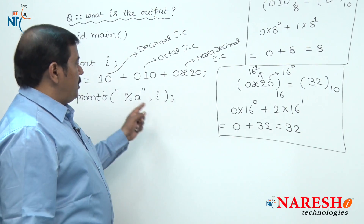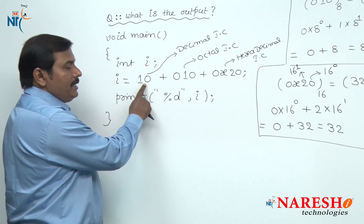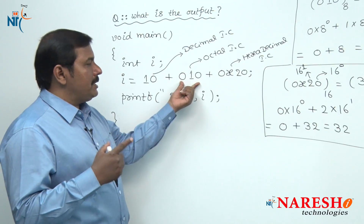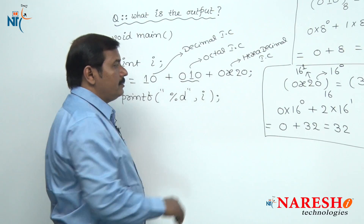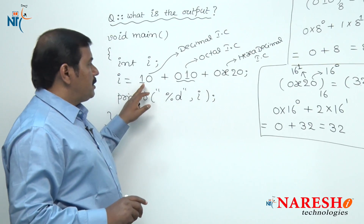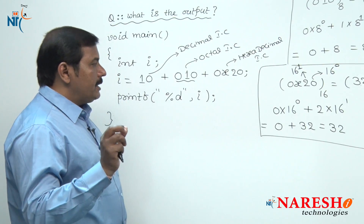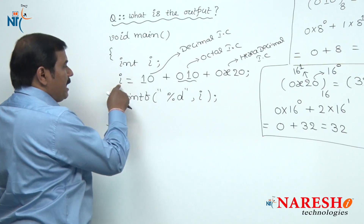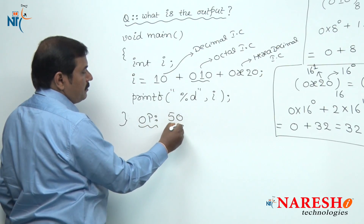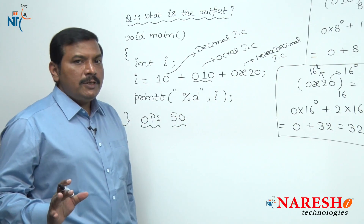After conversion, add all three integer constants. The first integer constant is the decimal integer constant 10, plus the equivalent decimal integer constant for octal 010 is 8, plus the equivalent decimal value for hexadecimal 0x20 is 32. So 10 + 8 + 32 = 50. This decimal value is assigned to the variable i, and the printf statement displays i value 50 onto the screen.